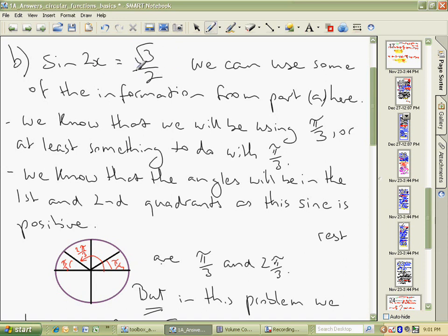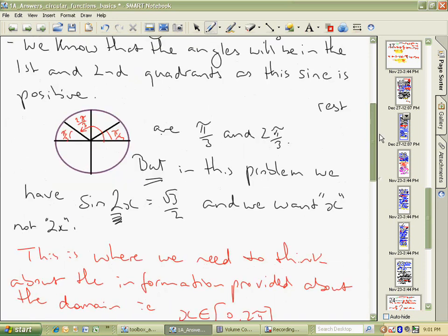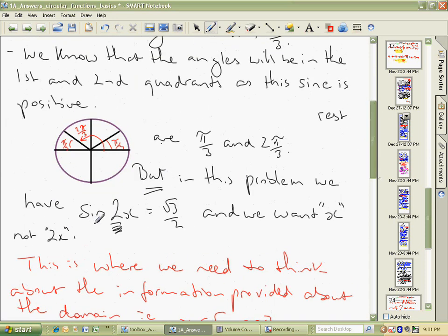The sign of both those because that's positive first quadrant, second quadrant, that's where sin is positive so that's okay. But this problem of course didn't say x, it said 2x.